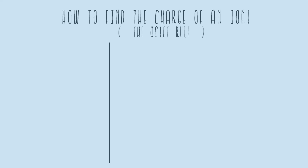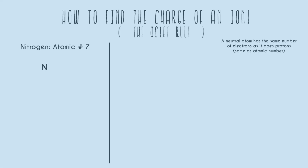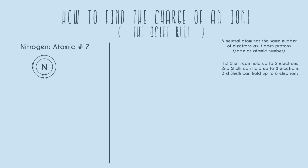Let's start by looking at nitrogen, which is atomic number seven. A neutral atom has the same number of electrons as it does protons, which is the same as the atomic number. So nitrogen, if it's neutral, will have seven electrons. Our first shell can hold up to two electrons, and then our second shell can hold up to eight electrons. For nitrogen, we fill up the first shell with two, then expand into the second shell, ending up with five electrons there, for a total of seven.